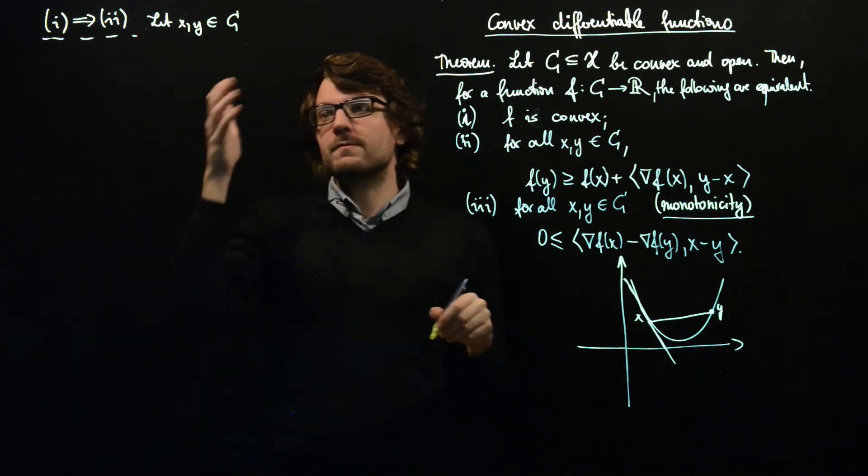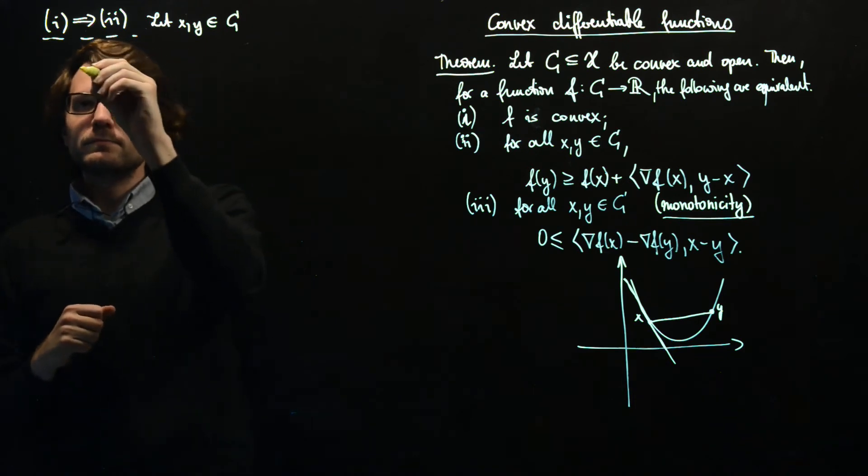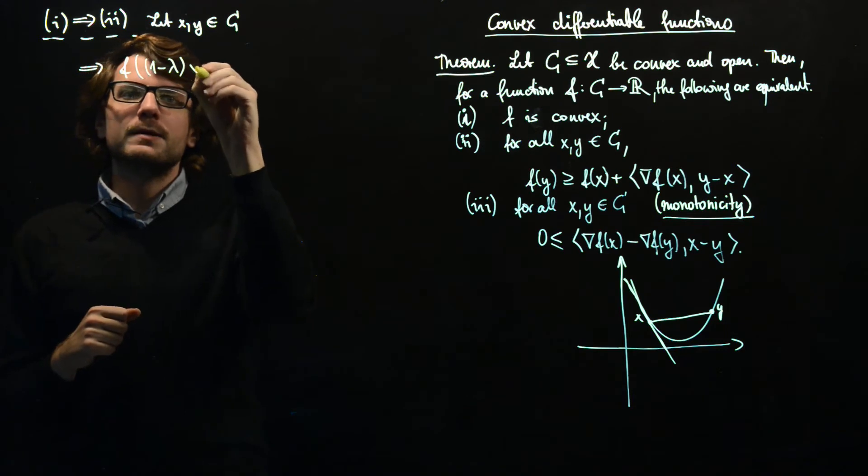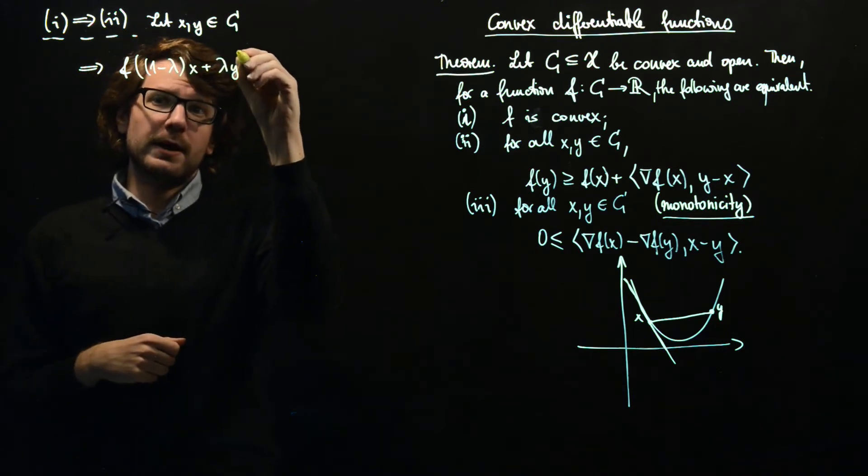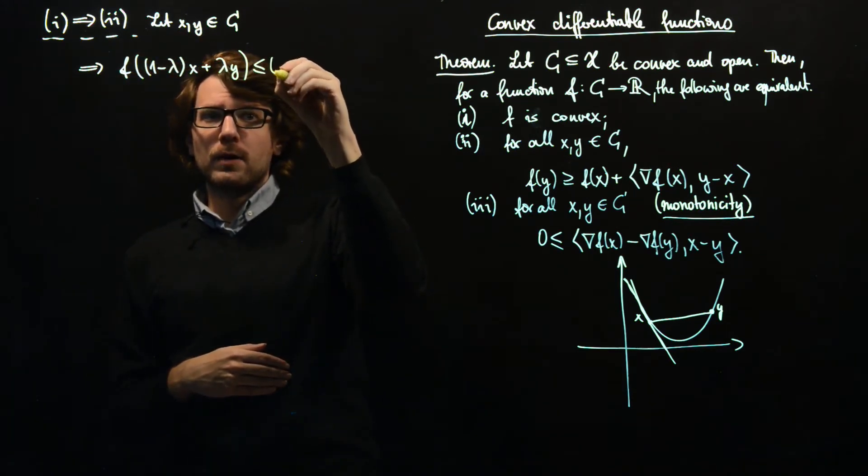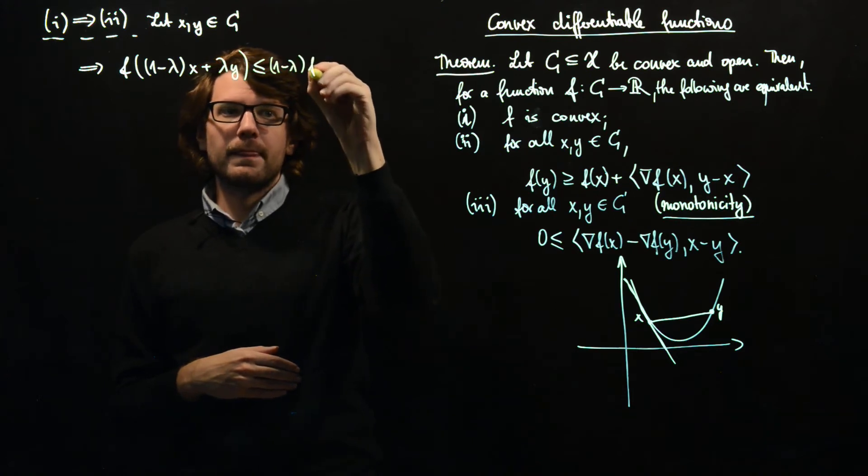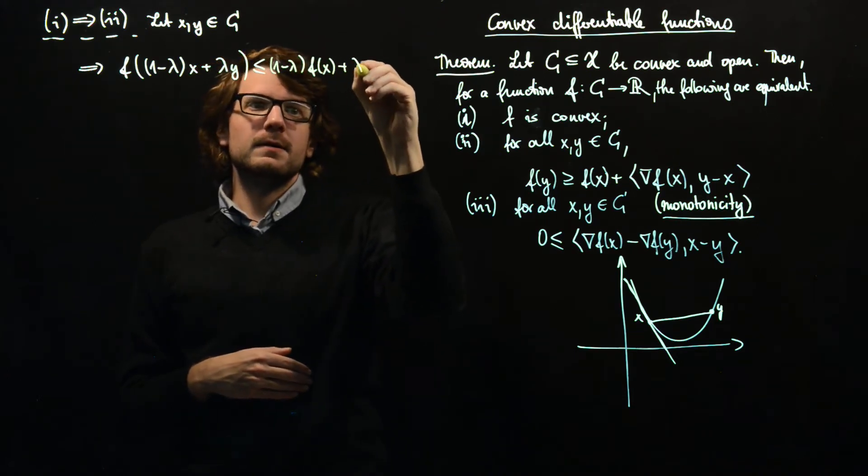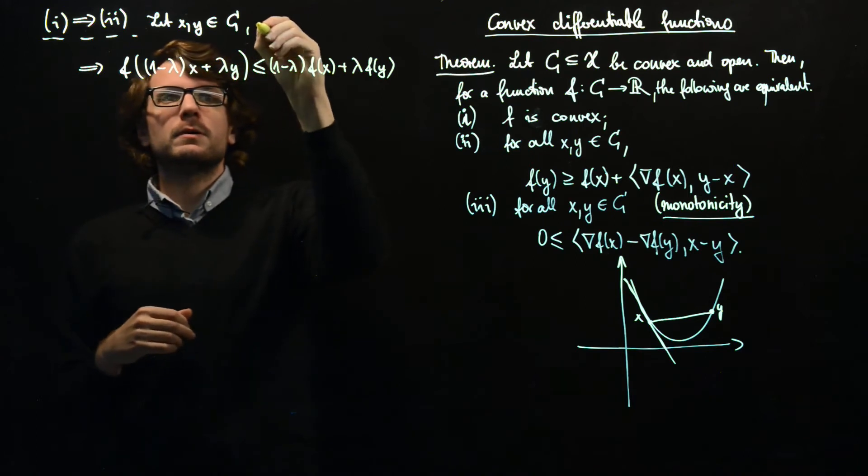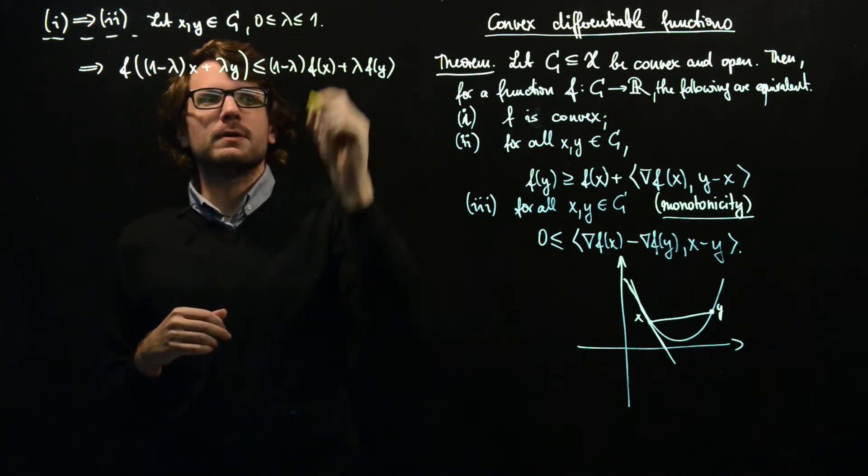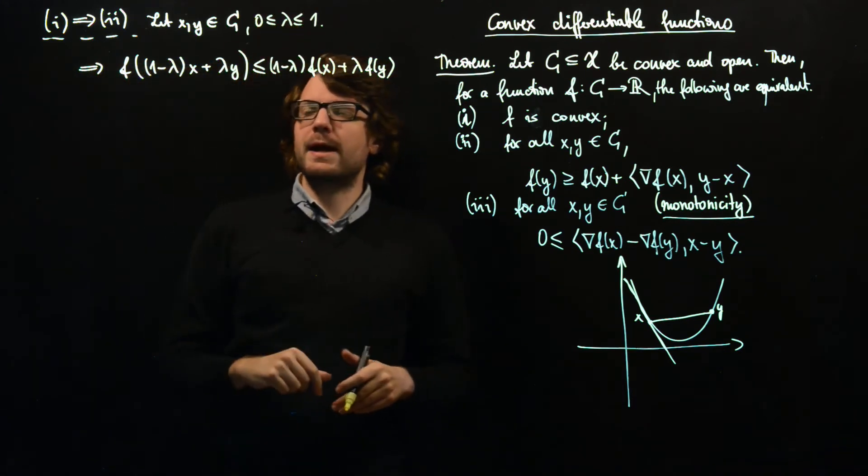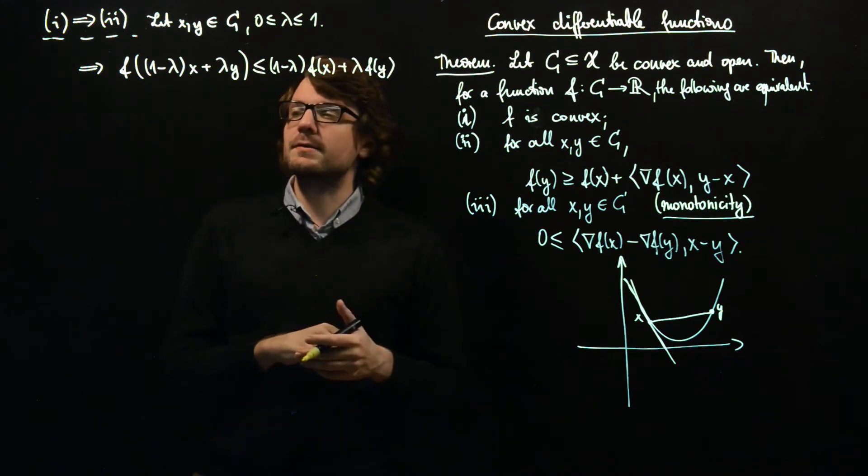What does convexity mean? Convexity means F((1-λ)X + λY) ≤ (1-λ)F(X) + λF(Y). So here we choose λ between 0 and 1 obviously, and we will make λ precise later.